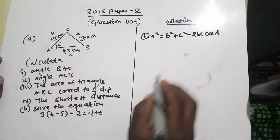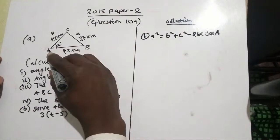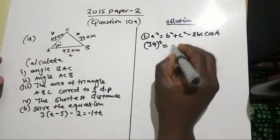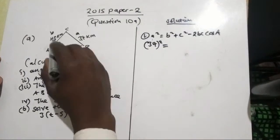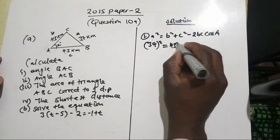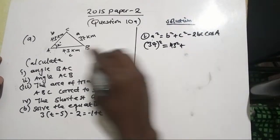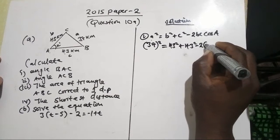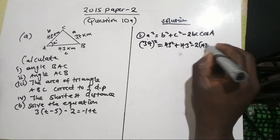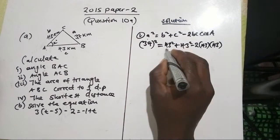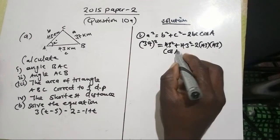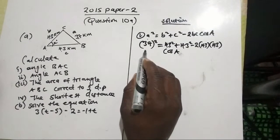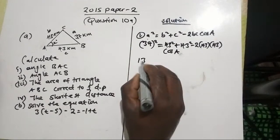Now let's substitute. The side a (small a) is 7, so a² = 7² = 49. Wait — small b is 43, so we have 43² plus 43² (since small c is also 43), minus 2 times 43 times 43 times cos(A). If you square 7, the answer is 1369.